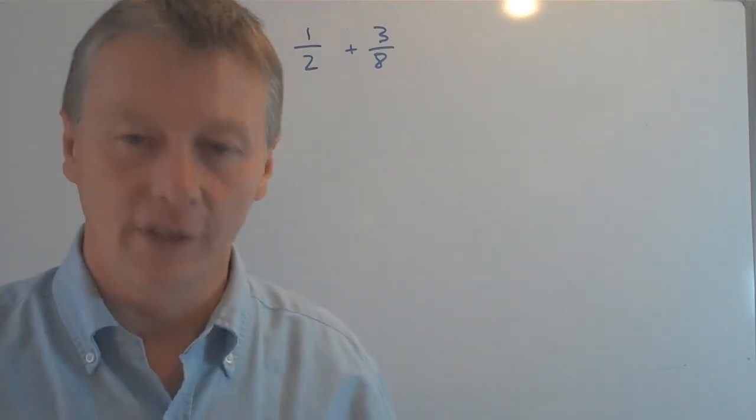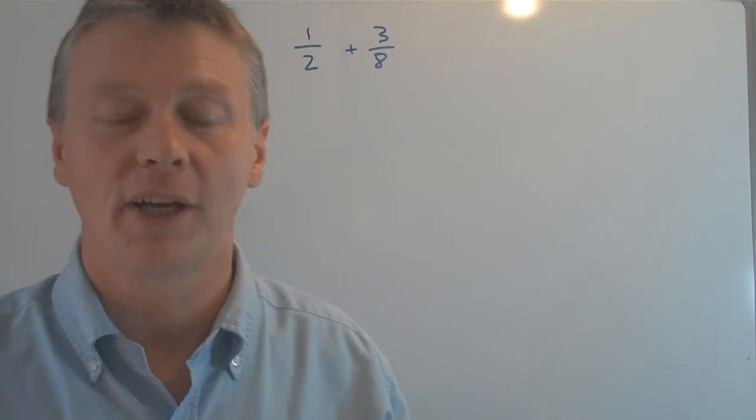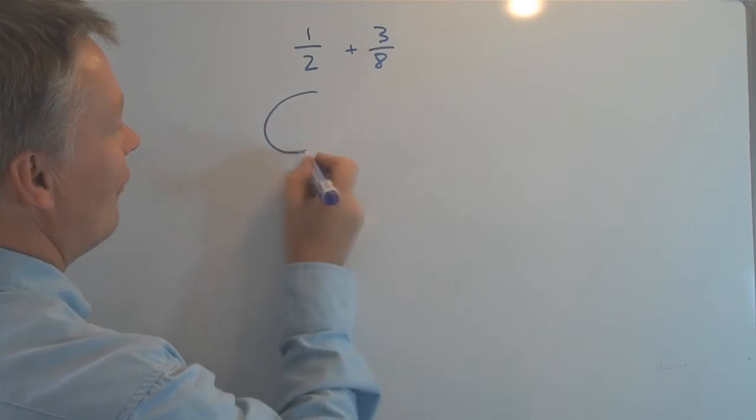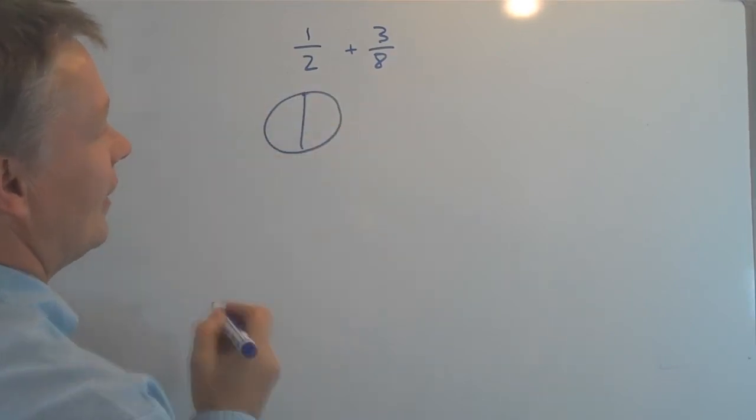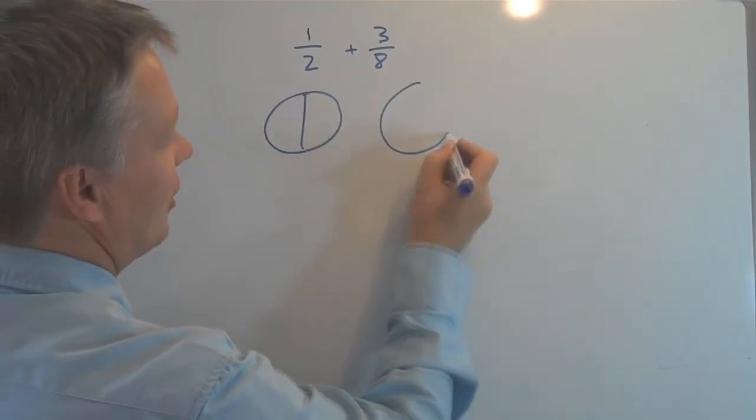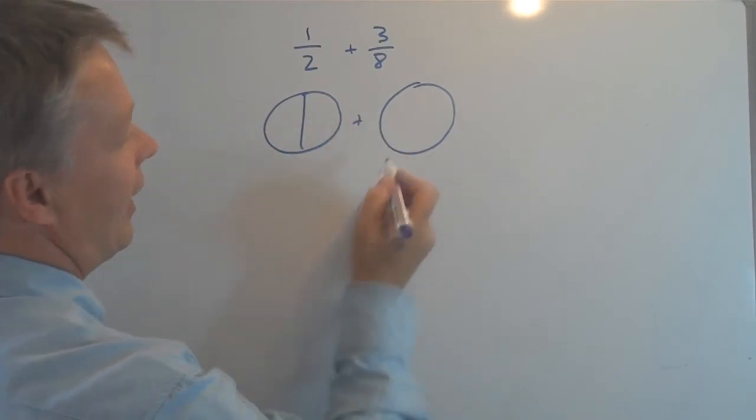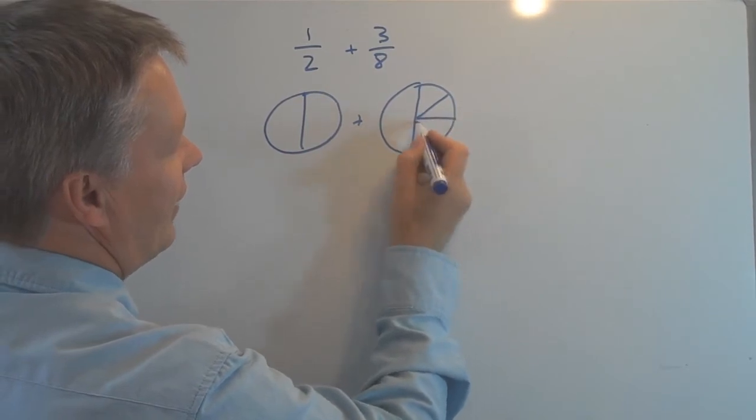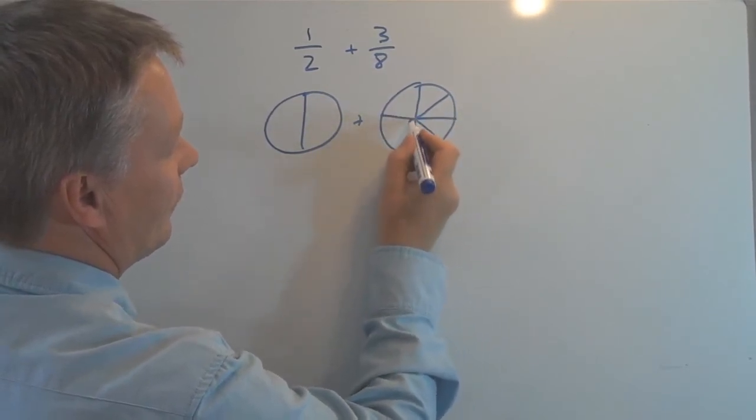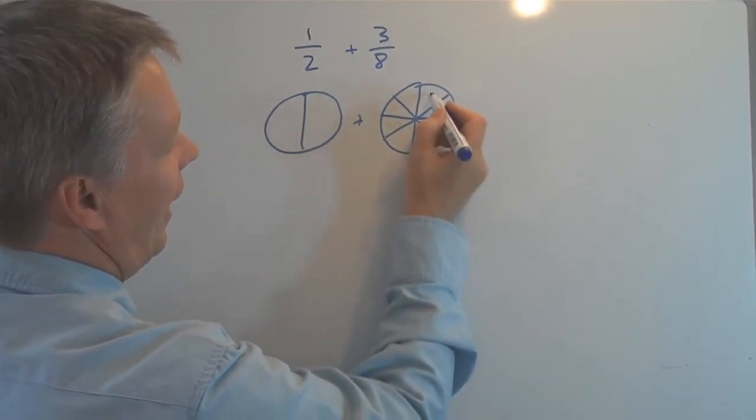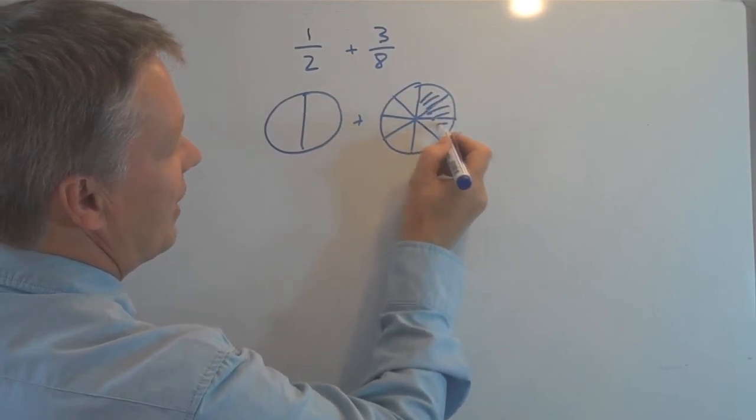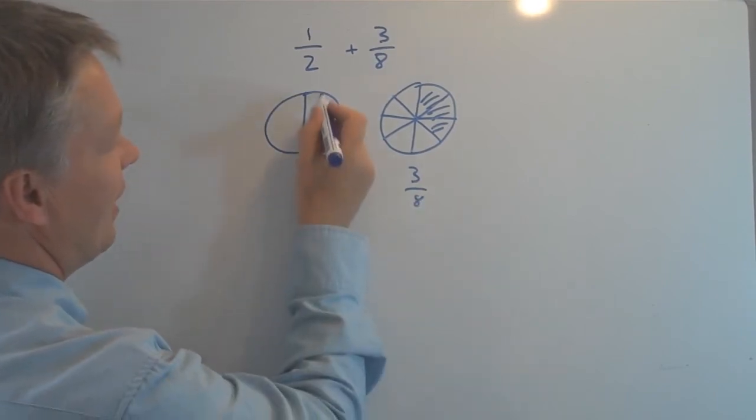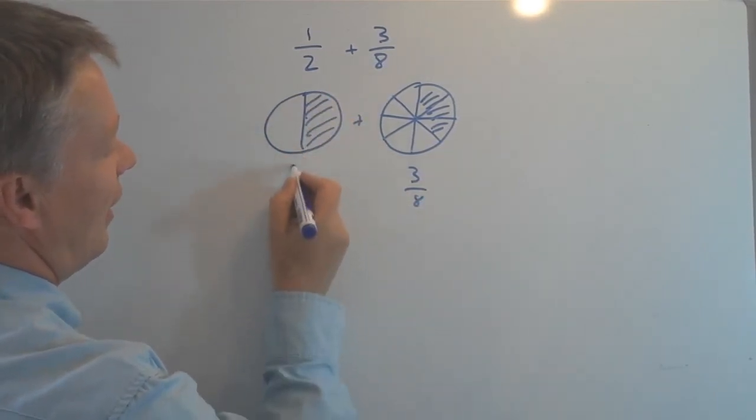And the way it's usually given in a lot of the test or the exam papers will be pizzas. So in other words, we've got half a pizza and we're going to add that to three-eighths of a pizza. So I'm going to divide that up into eighths. And this bit here will be three of them. So it's three-eighths. And this bit here is a half.